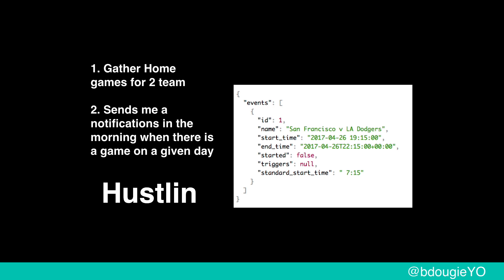It cost me seven bucks a month. For a whole year — even though baseball only happens about ten months out of the year — I paid for a year of it telling me when there are baseball games. This is the JSON data coming from Heroku. I'm not gathering all baseball games; I'm just gathering home games for two teams. The scheduler tells me when there's a home game, and I get an email every morning around 3 a.m. It just says, hey, there's a baseball game today. That's the app.